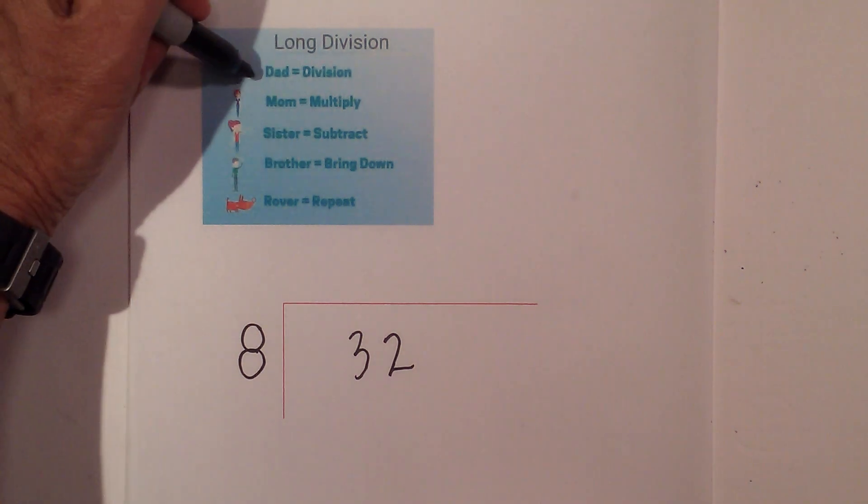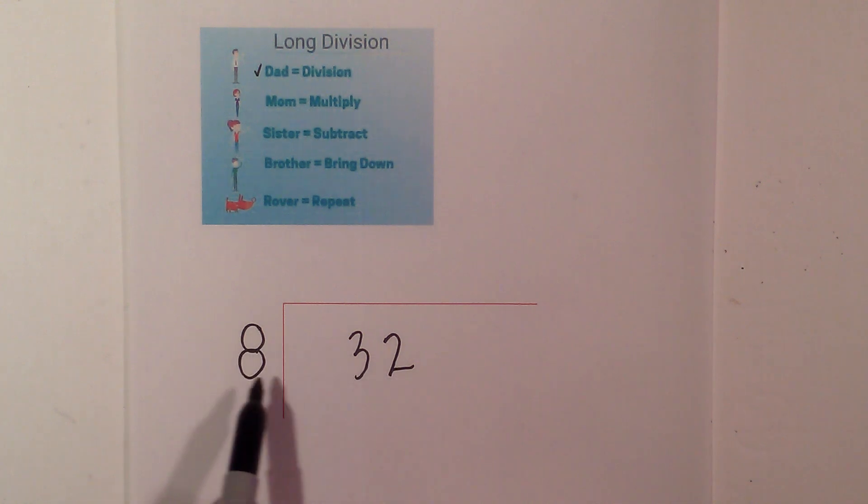Okay, so let's begin. I'll put a check with division. 8 goes into 32. 8 will not go into 3, so I will move. 8 goes into 32.